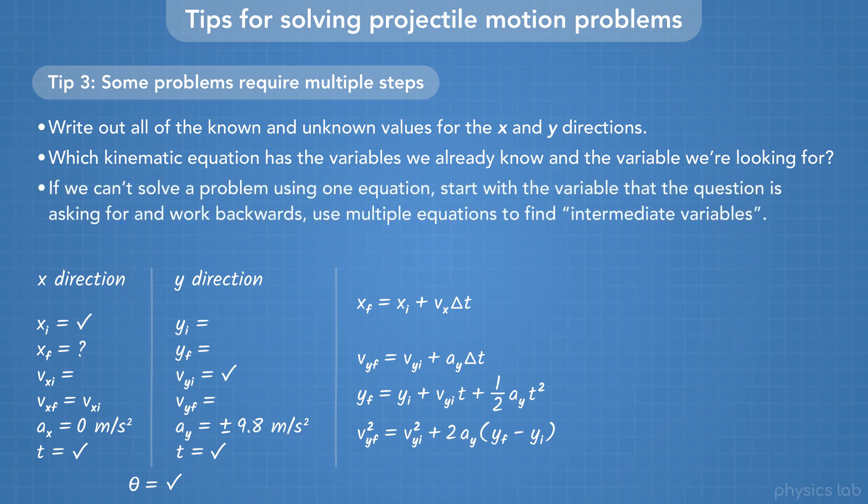If we can't solve a problem using one equation, then we should start with the variable we're looking for and work backwards, and use multiple equations to find intermediate variables. For example, let's say we already wrote down all the variables we know, and the question wants us to find the final X position.